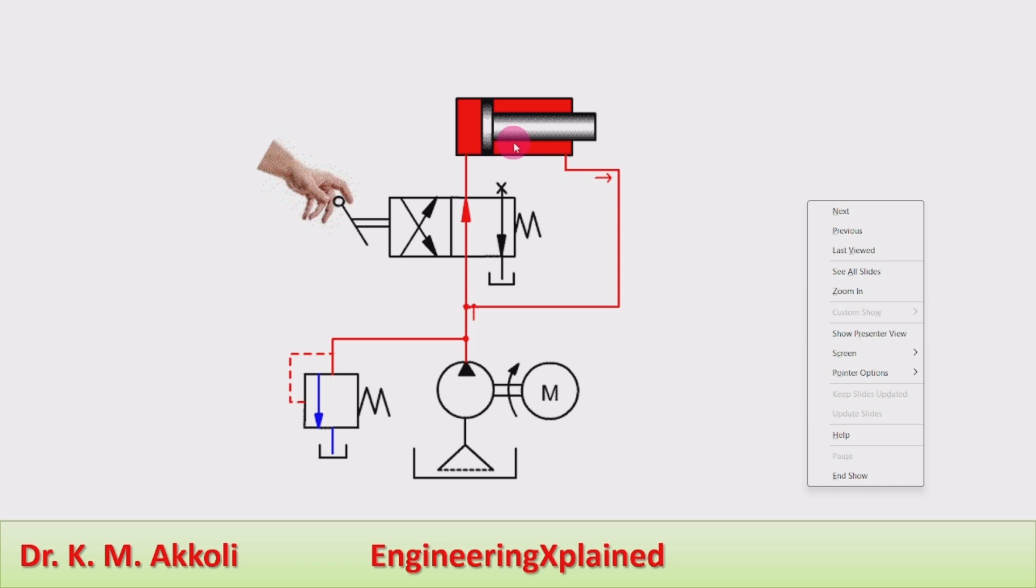Then the fluid from the rod end of the cylinder will bypass the direction control valve and regenerate the pump flow. That means the flow from the outlet of the rod end side will be added to the pump flow.